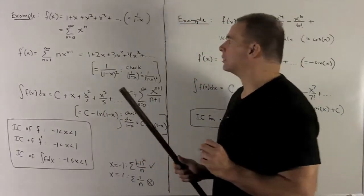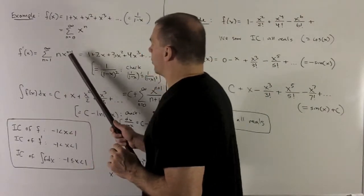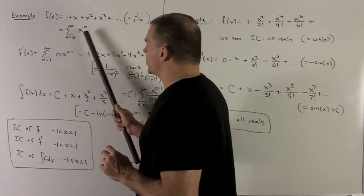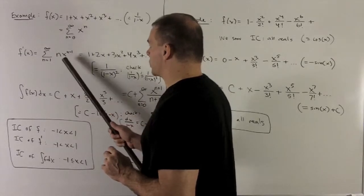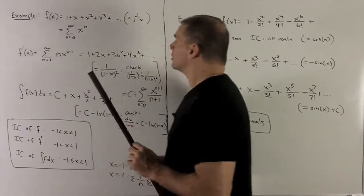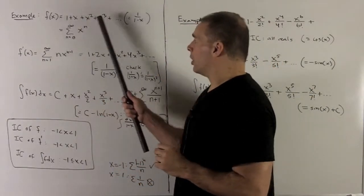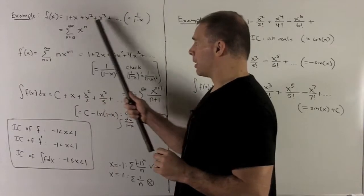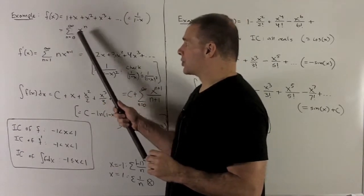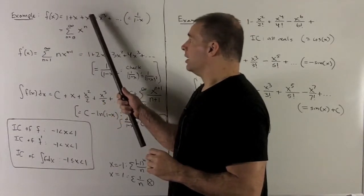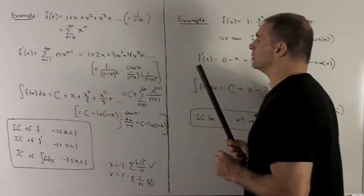Let's look at the derivative. If we go with this, it's going to be: bring down the n, and then take 1 off the exponent. Or I can go term by term on this sum. So 1 goes to 0, x goes to 1, 2x, 3x squared, and so on.